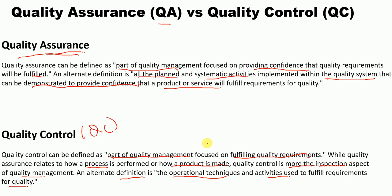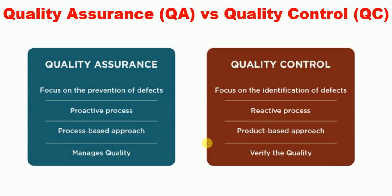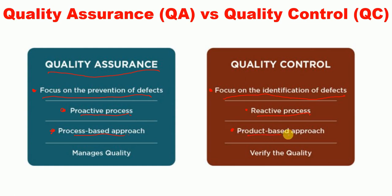Now the key differences between QA and QC: Quality assurance focuses on prevention of defects, whereas quality control focuses on identification of defects. Quality assurance is a proactive process, while quality control is a reactive process. Quality assurance is a process-based approach, whereas quality control is a product-based approach. Finally, quality assurance manages quality, whereas quality control verifies quality.